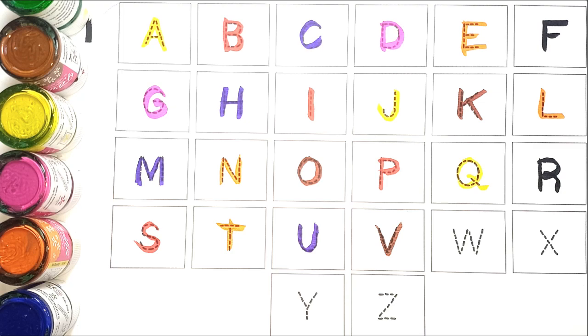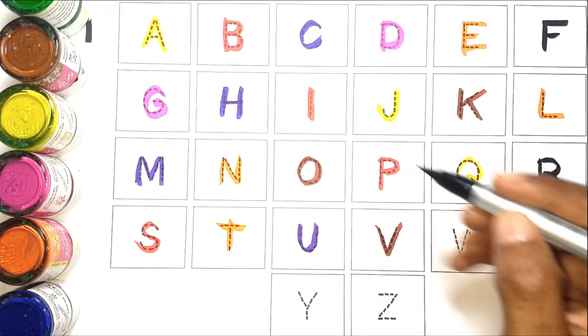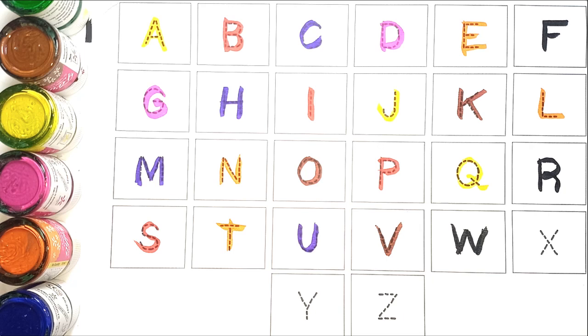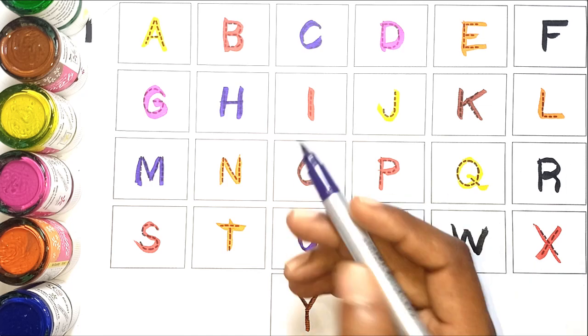Black color W, W for wood. Red color X, X for x-ray. Chocolate color Y, Y for yak.